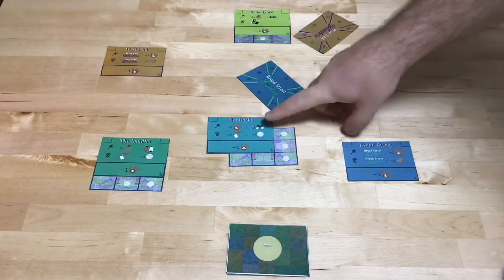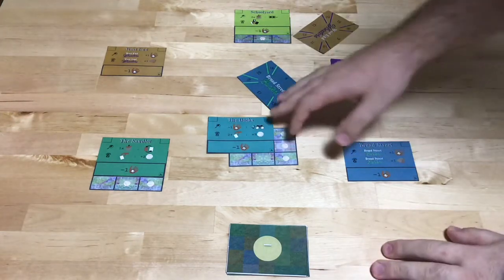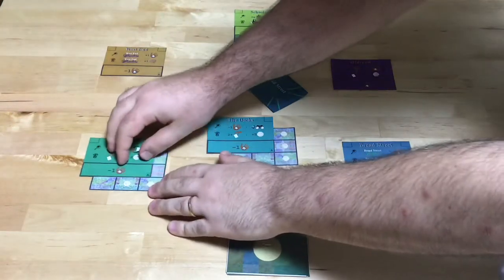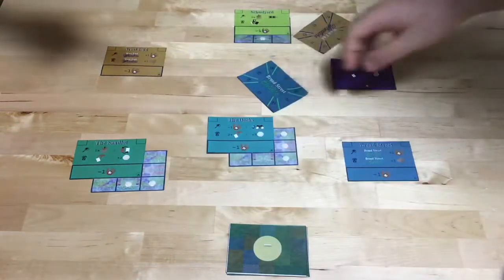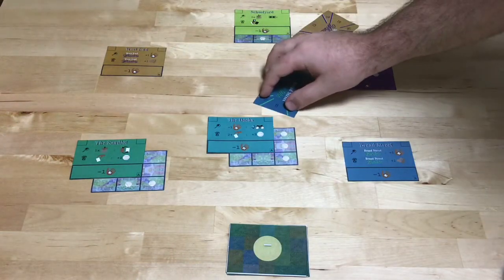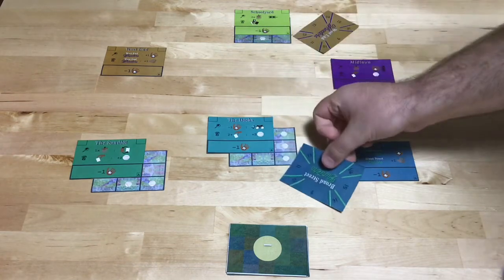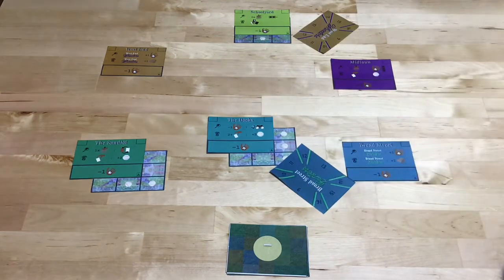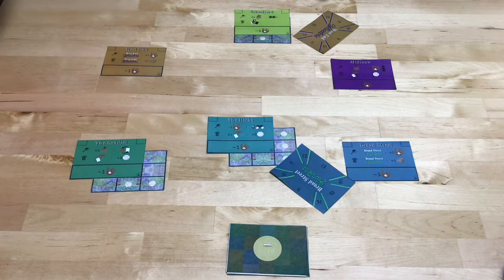You can choose to use the special ability of the location. In this case, I can scout remotely, so I could do that for example. But in order to do that, I have to decrease my sway by one. And the last thing you could do is you can move to a different location.